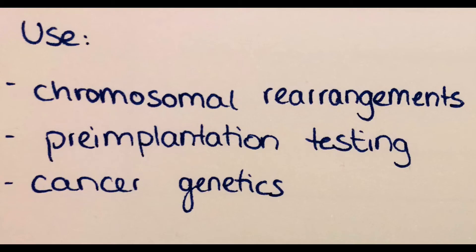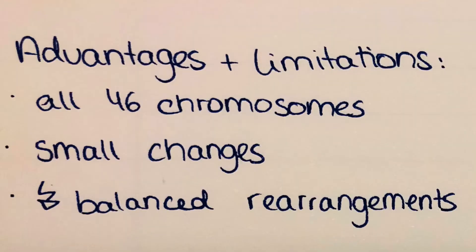This test is used in the detection of chromosomal rearrangements, in pre-implantation genetic testing, and also in cancer genetics. One advantage is that all 46 chromosomes can be investigated simultaneously with only one test. It can also detect smaller deletions or duplications than cytogenetic testing, but it cannot detect balanced rearrangements, polyploidy or single gene disorders.